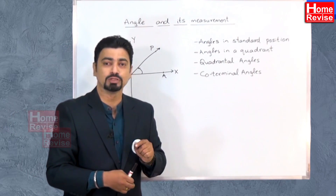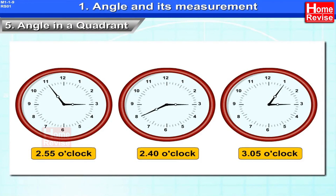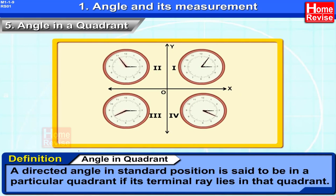Angles in a quadrant: consider a clock showing various timings. In all positions the initial arm is fixed at 3 o'clock along the positive x-axis, but the final arm is in various positions — these are directed standard angles. The position of the terminal ray decides which quadrant the angle lies in. A directed angle in standard position is said to be in a particular quadrant if its terminal ray lies in that quadrant.